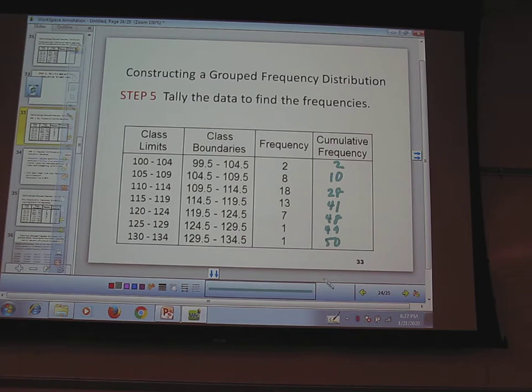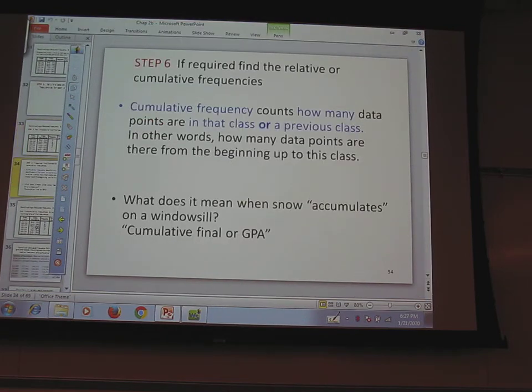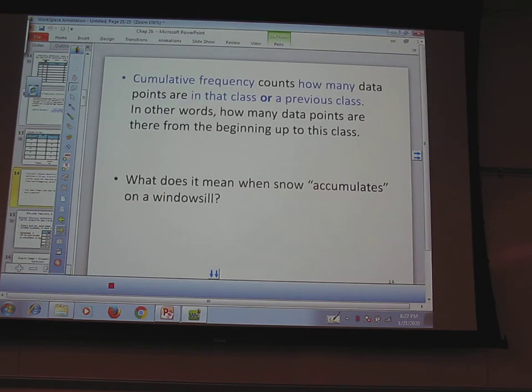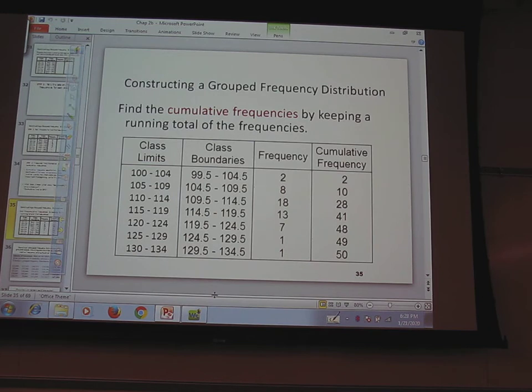Chapter 2.2. A frequency distribution is the organization of raw data in table form using classes and frequency. It is also useful to find the percent of the total that each class represents. We call this the relative frequency, the percent. What percent is in each class - the ratio of what's in that class, the frequency of that class compared to the total. It shows how it's related to the total.